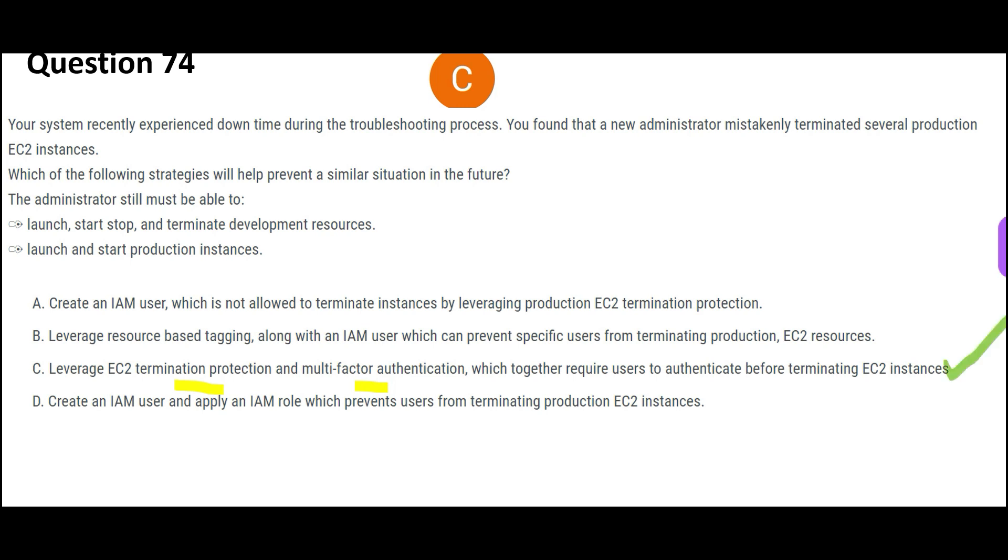Using the app, you have to give that code, then only it will terminate. So that will prevent accidental termination because the moment it asks for a code, you will know what happened and realize this is a mistake. So C would be my answer. A is wrong because IAM is used to give access or deny access - it cannot be used for termination protection. Same here, they are trying to leverage resource-based tagging and IAM user which can prevent users. Simple: when AWS has provided you a feature, don't try to be creative and create a custom solution.